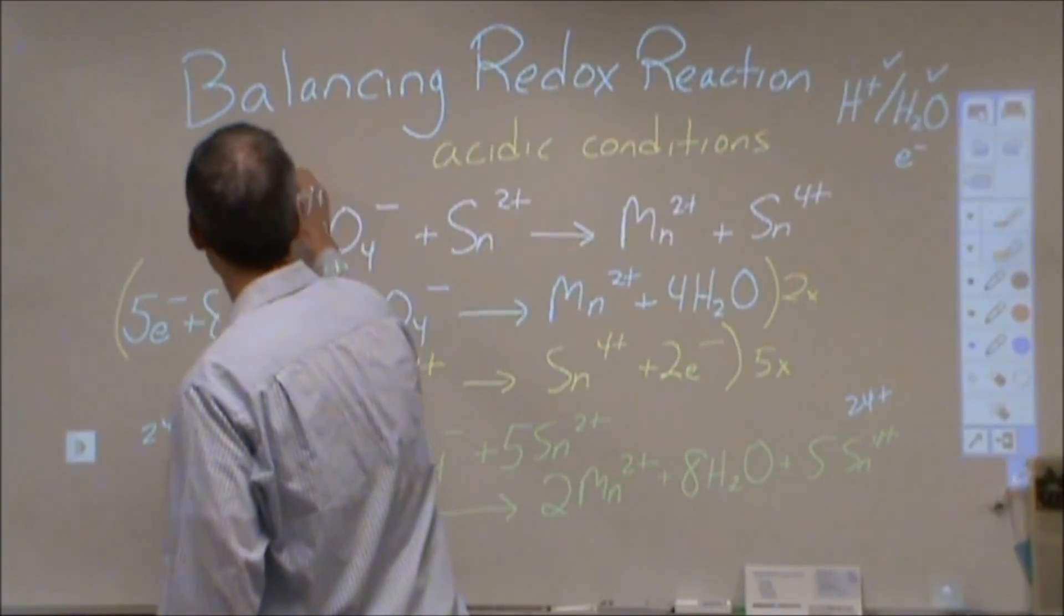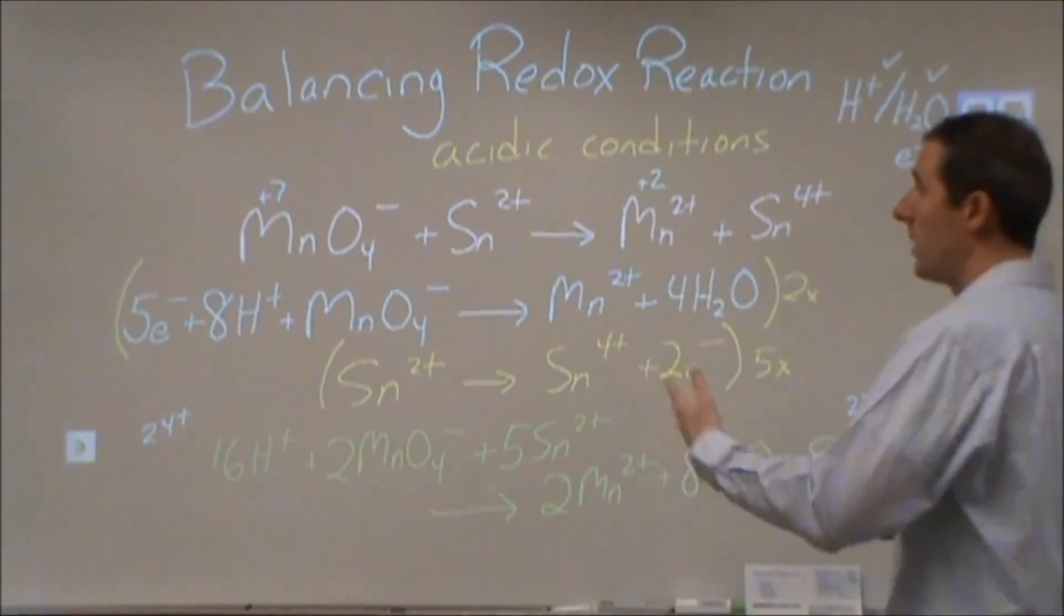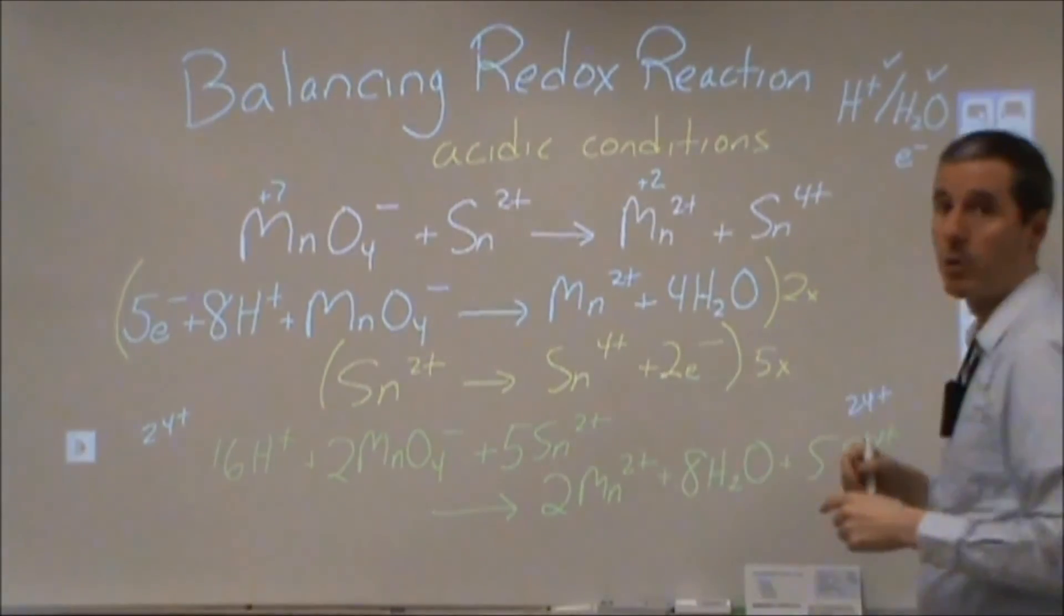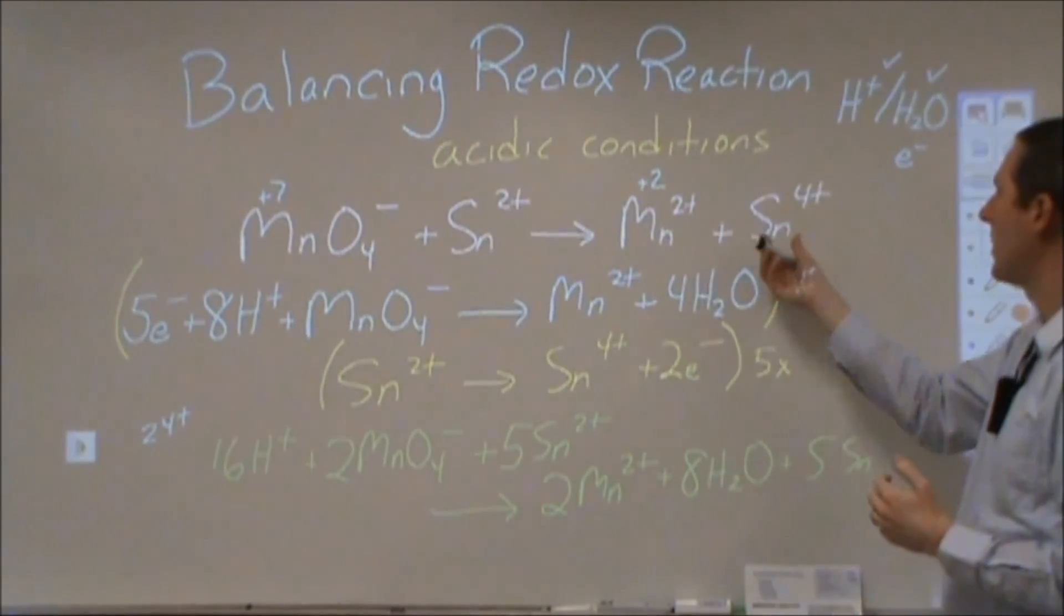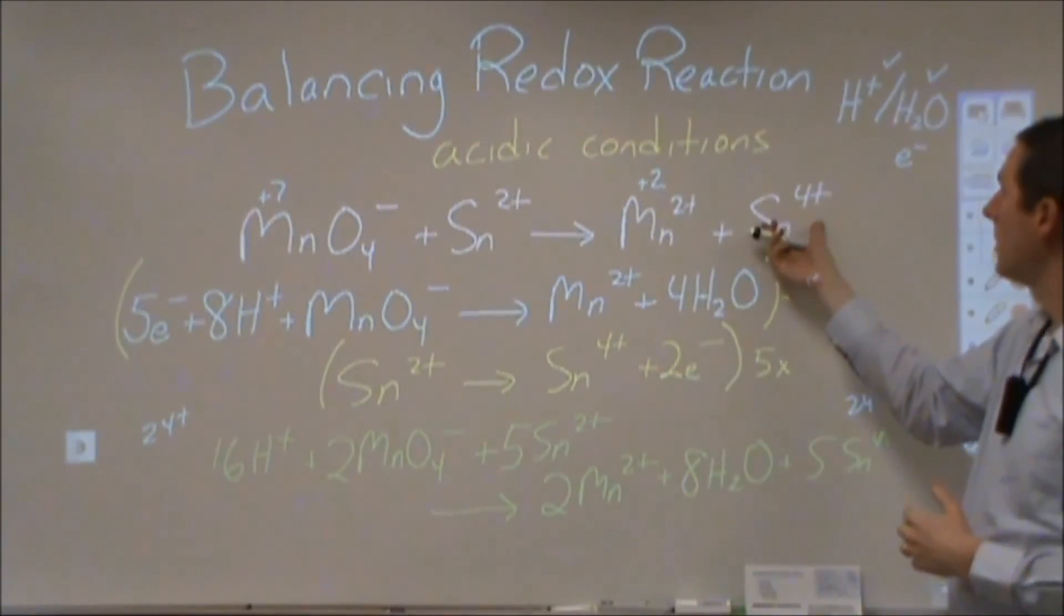Alternatively, we could assign oxidation states and say, well, this is a +7, and this is a +2. So that's being reduced, so then this number is going to need to go up. The charge on that is going to go up, so that the oxidation state is being oxidized, or that the Sn2+ is being oxidized. And that's how you would figure out that this is going to turn into Sn4+.